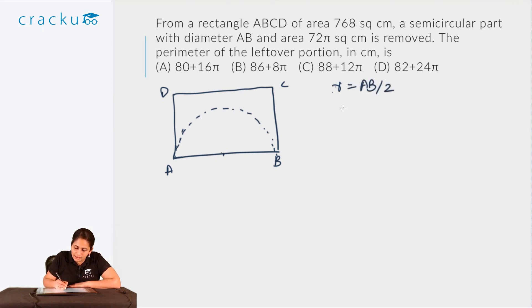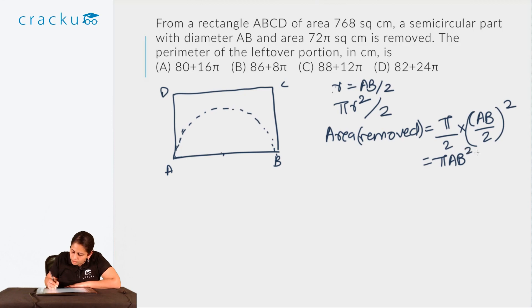The area of the circle with this radius would be πr² and the area of the semicircle would be πr²/2. So the area of the removed part would be πr²/2, that is r² equals (AB/2)². So I get πAB²/8. And this is equal to 72π. Cancelling π from both sides and taking 8 over there, I get AB² equals 24... AB equals 24 centimeters. So I got AB equals 24 centimeters.